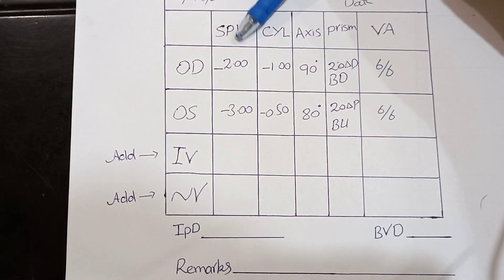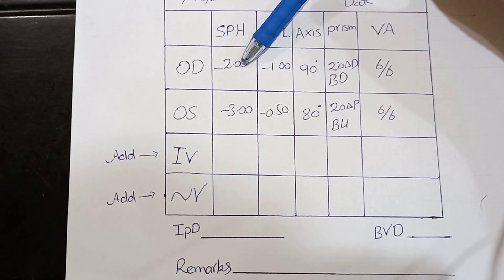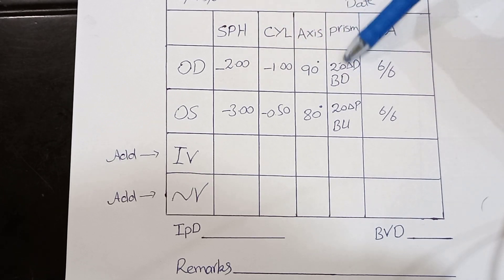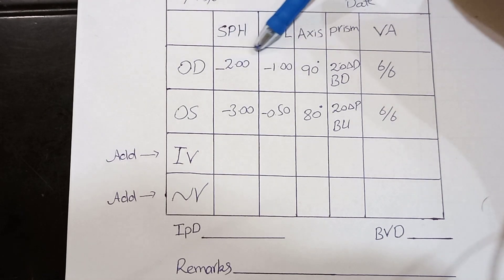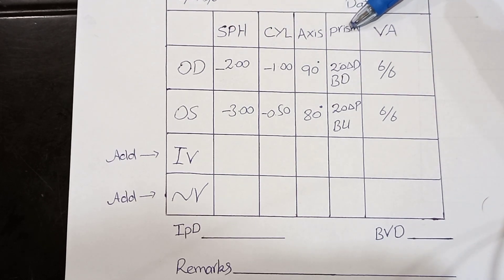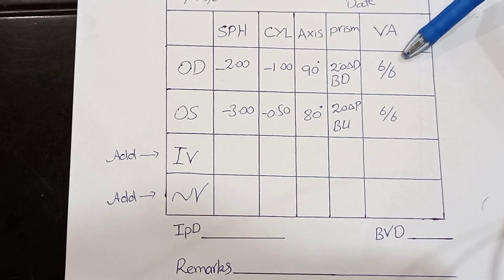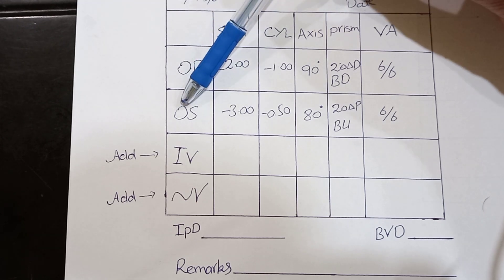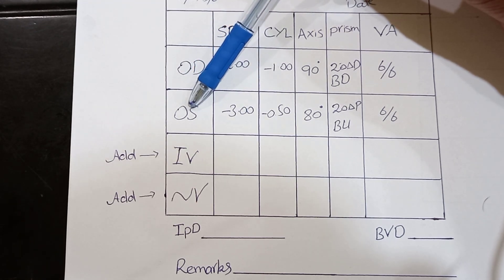The spherical box is for spherical correction, the cylindrical box is for cylindrical correction, and the axis box is for the axis of the cylindrical correction. The prism box is for prism if required. OD stands for oculus dexter (right eye) and OS stands for oculus sinister (left eye). After recording all prescribed values, the visual acuity of the patient is written in the VA box.